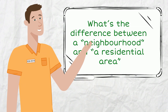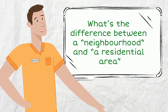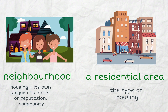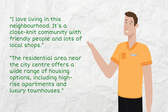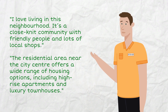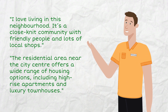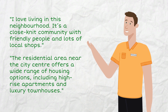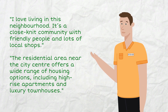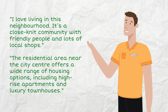What's the difference between a neighborhood and a residential area? A neighborhood is a part of a city that has its own unique character or reputation. It's not simply a residential area, as the latter is more about the type of housing, while the former is more about the community and certain cultural aspects. For example, you can say: 'I love living in this neighborhood. It's a close-knit community with friendly people and lots of local shops.'